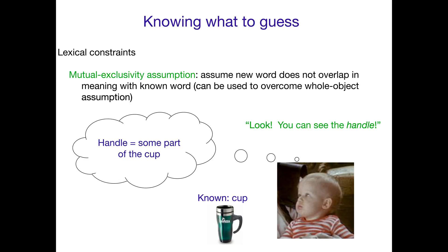Mutual exclusivity can be used to overcome the whole object assumption — the idea that when you first hear a word, you map it to the entire object. So if you know this thing is called a cup and someone says 'oh look,' clearly talking about this thing, and you can see the handle, you think: I know you can't be talking about the whole object because I already know that whole thing is called 'cup.' So maybe they're talking about something else — perhaps exactly where they're looking or touching — focusing your attention on the handle.